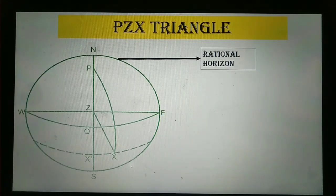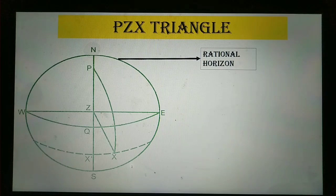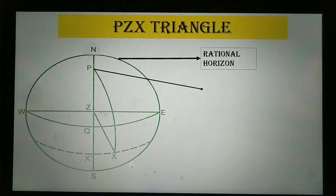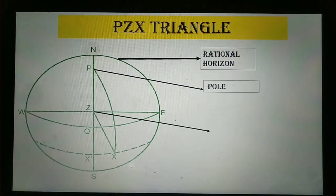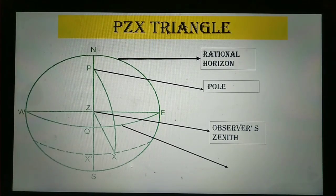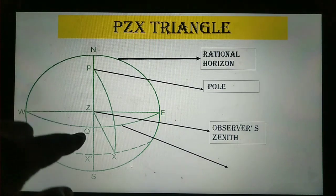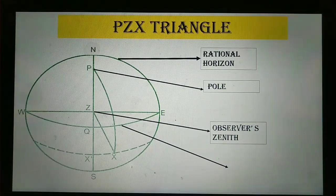The first one is rational horizon. As you know, rational horizon is 90 degrees equidistant from the zenith and nadir. This P represents pole, Z represents observer's zenith, and WQE represents the equinoctial.